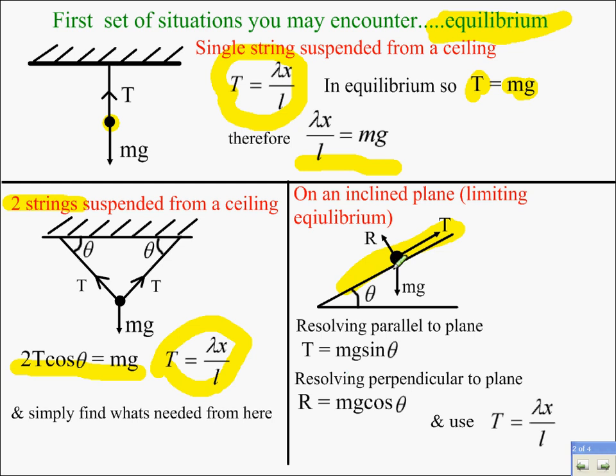Resolving perpendicular to the plane, we have R, the normal reaction, is equal to the other component of the weight, Mg cos theta. So between those two and good old Hooke's law, we can then rearrange and find whatever the questions ask us to.